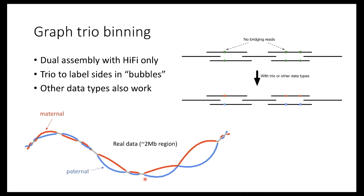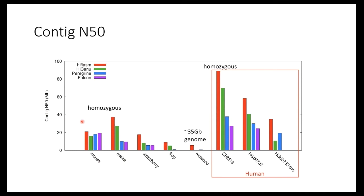On real data, this shows results for different species: human, mouse, maize, strawberry, frog, and redwood. In terms of contiguity, hifiasm (the red bar) is considerably better than all other assemblers. We also introduce a new metric to evaluate assembly quality in different regions — the percent multi-copy genes missing — which measures what percent of multi-copy genes in the reference are missing from the assembly. Suppose there's a segmental duplication in the reference genome with two copies; a good assembler should reconstruct both copies.